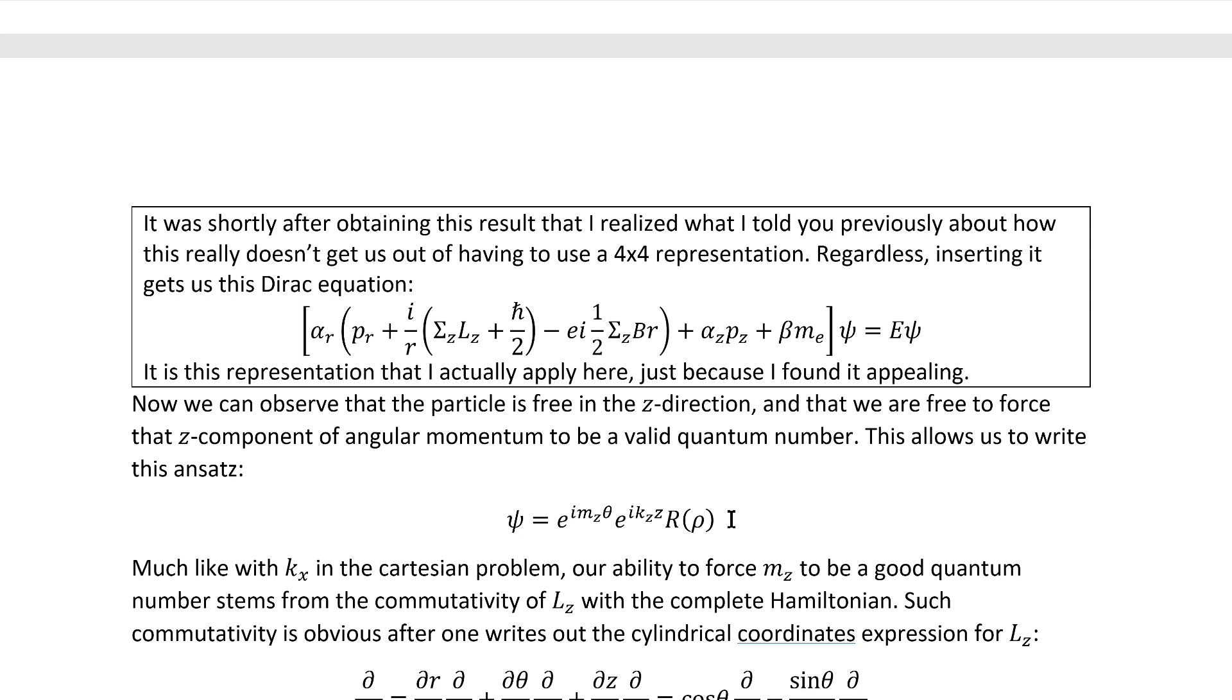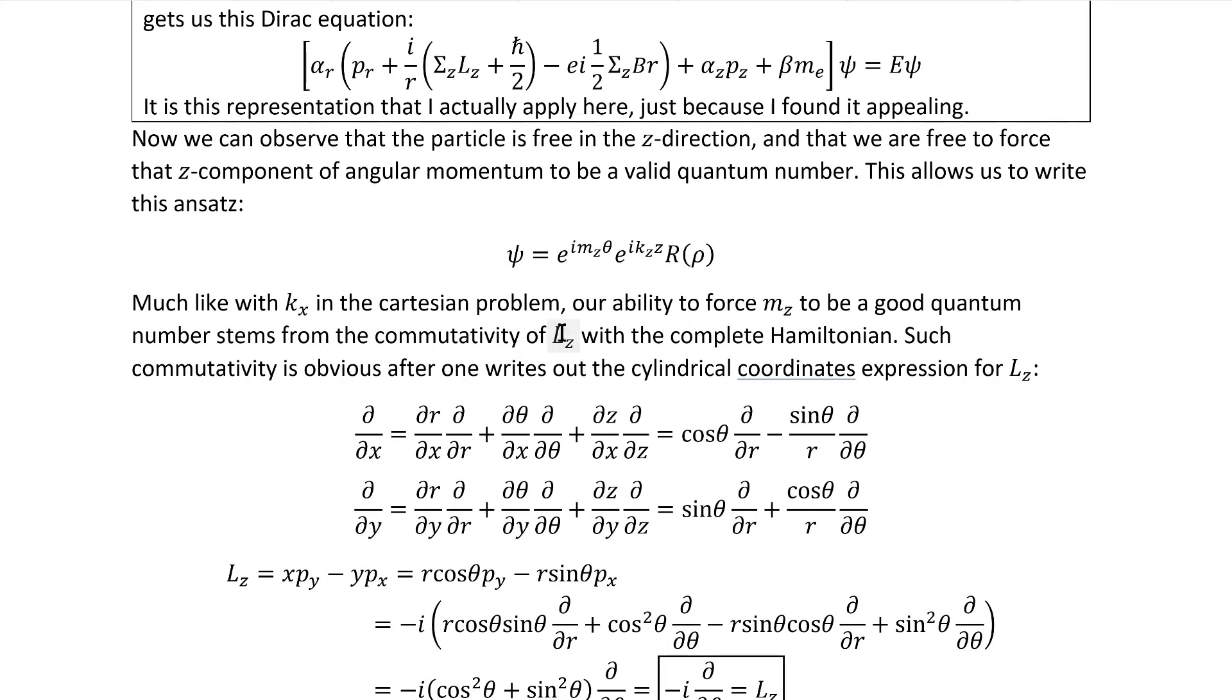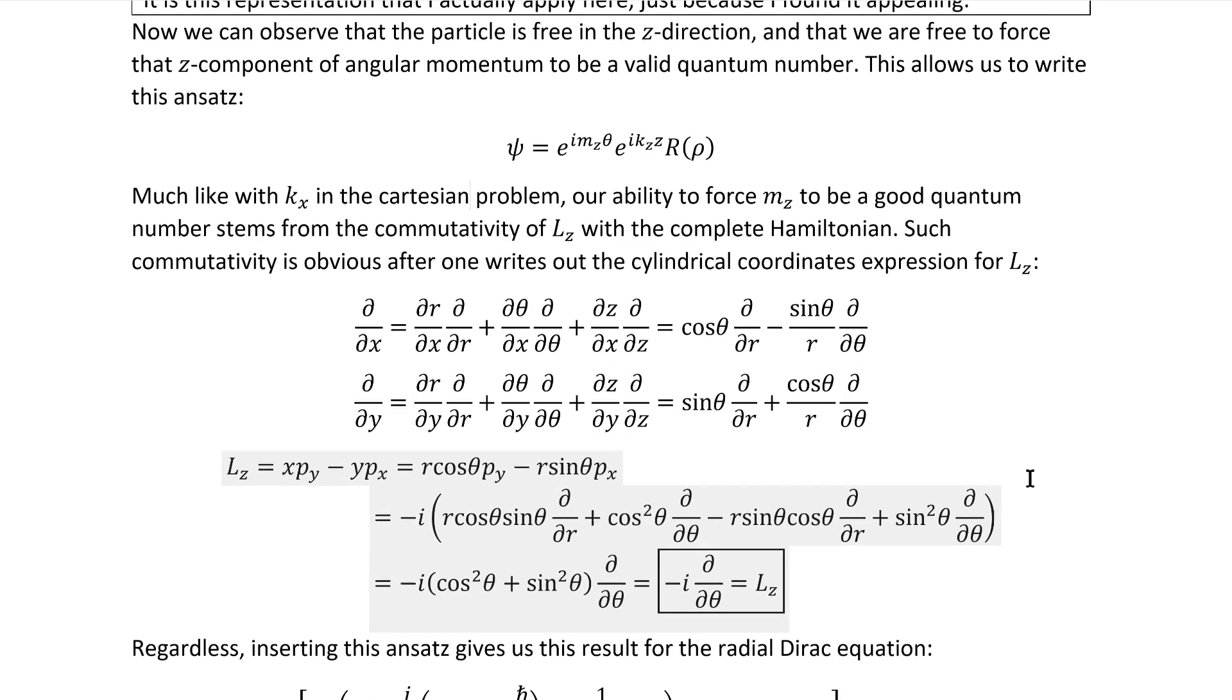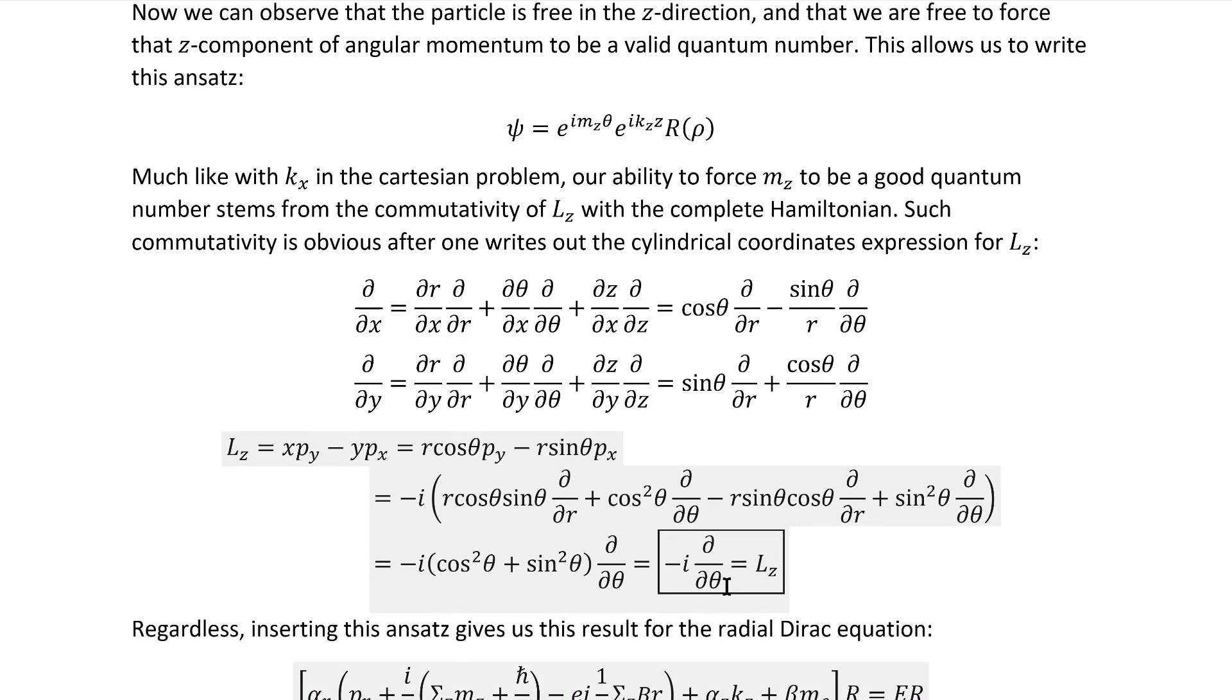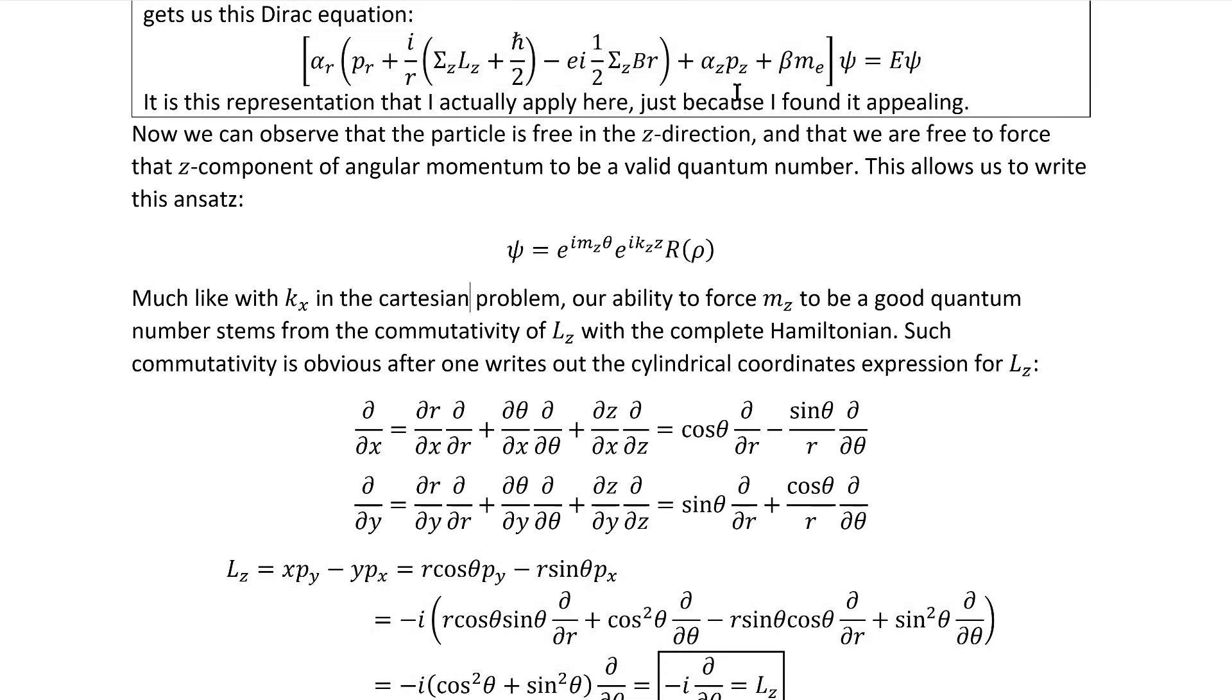Now we can observe that the particle is free in the z direction, and that we're free to force the z component of angular momentum, kind of like what we did with Kx in the Cartesian case. This allows us to write this ansatz, and much like with Kx in the Cartesian problem, our ability to force Mz to be a good quantum number stems from the commutativity of Lz with the complete Hamiltonian. That commutativity becomes obvious once we write Lz in terms of cylindrical coordinates. We see that given that theta is the same angle geometrically as phi is in spherical coordinates, it ends up taking the same form as the spherical coordinates expression for Lz, quite intuitively, and it is obvious that this would commute with this Hamiltonian here.